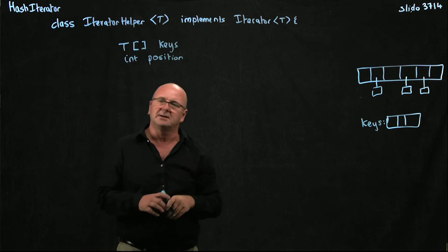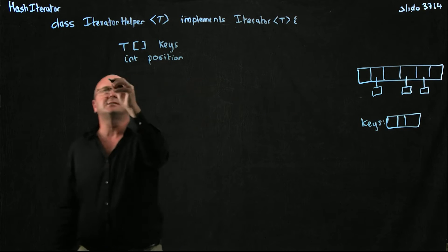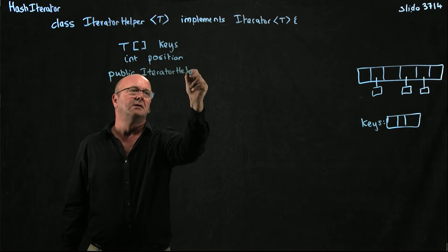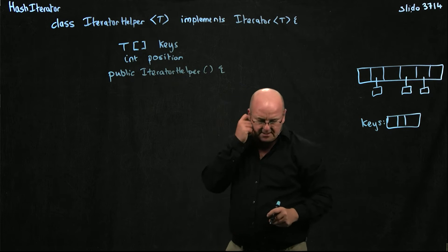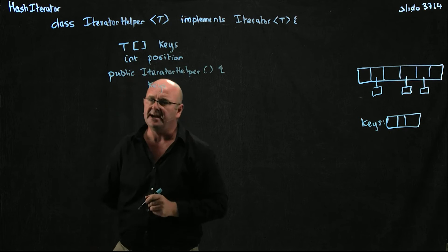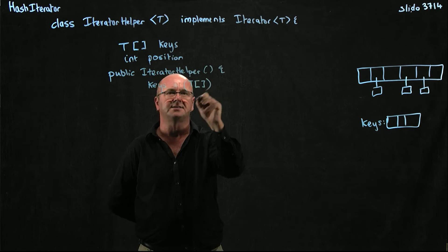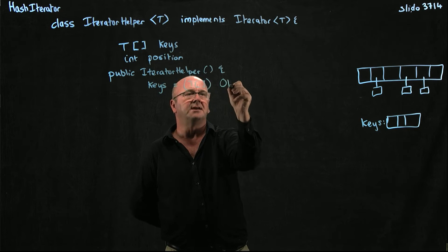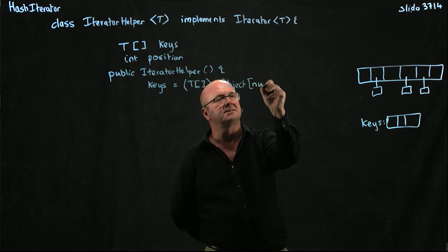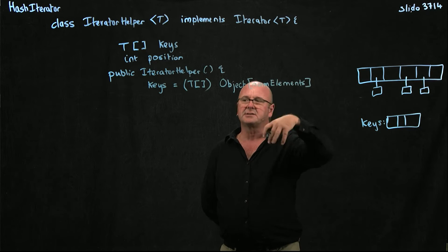Our constructor is going to do all the work — it's going to go through our hash, get each of the linked lists, go through the linked lists, get the keys, and put them into our keys array. We'll have a public IteratorHelper default constructor that takes no arguments. We're going to define the keys variable to be an array. Since this is a Java generic array, we have to cast it as an array of Ts — it will be an Object array that we cast, of size equal to the number of elements we have in our hash, which is our globally scoped variable tracking how many elements we've added.